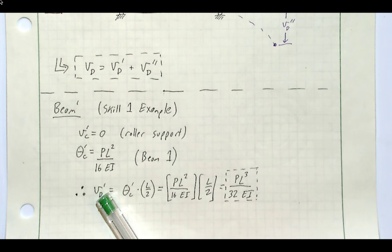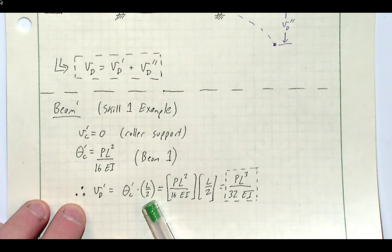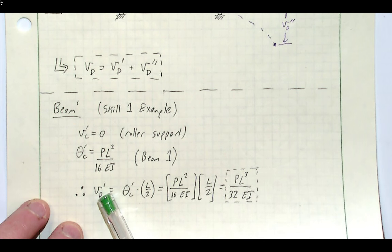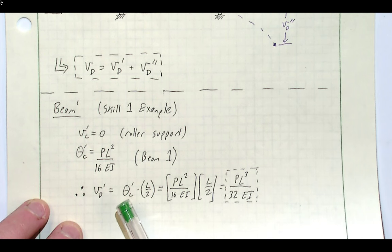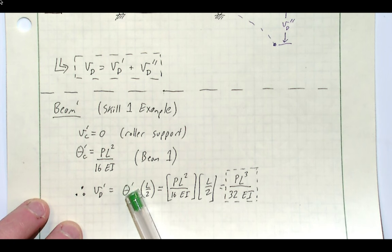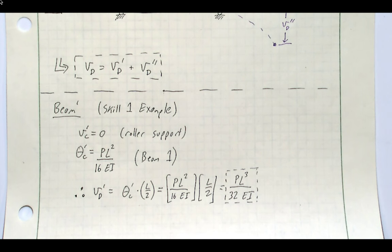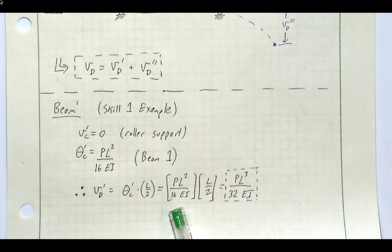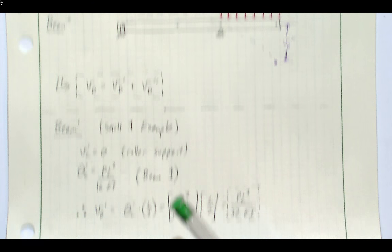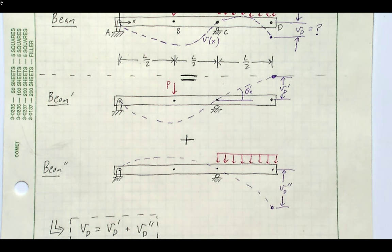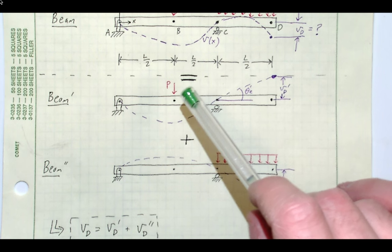Now we need vD prime, which is just the slope multiplied by the distance from C to D. This comes from the equation of a line: we start at zero deflection at C, then vD prime equals theta_C prime times the overhang length L/2. Multiplying PL²/16EI by L/2 gives vD prime = PL³/32EI. This linear relation holds because there is no loading on the overhang for beam prime.